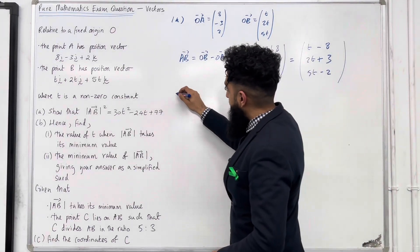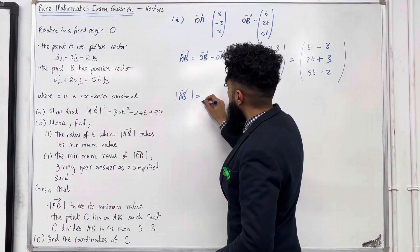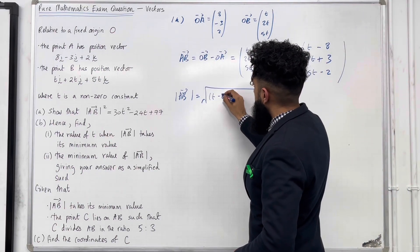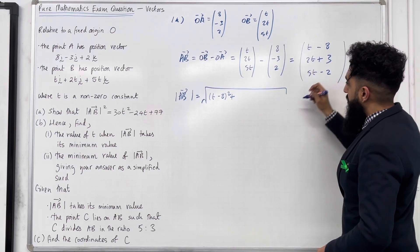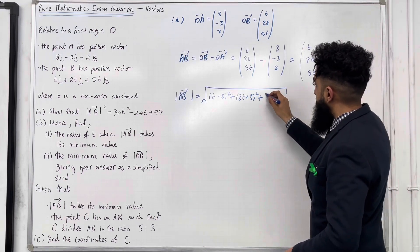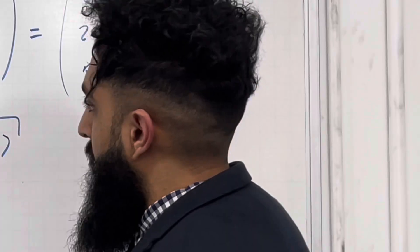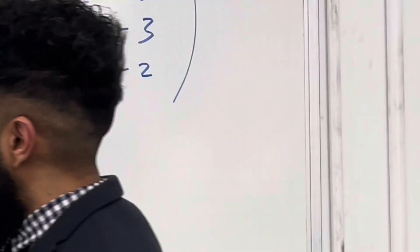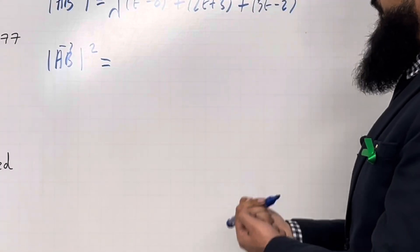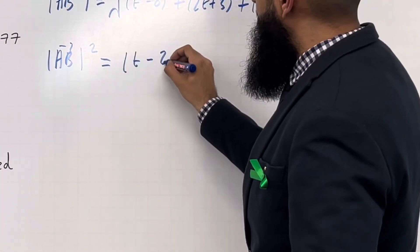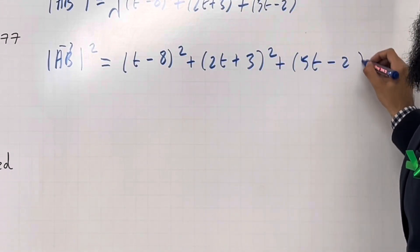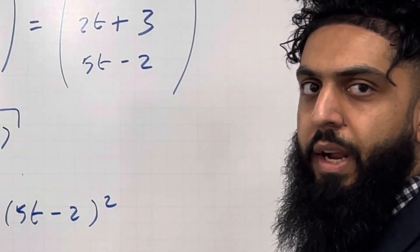Now I'm going to find the magnitude of the vector A to B. This is given by the square root of the i component squared plus j component squared plus k component squared. I can take the square on both sides, so the magnitude of AB squared eliminates the square root, giving (t minus 8) squared plus (2t plus 3) squared plus (5t minus 2) squared. That is my expression on the right-hand side.